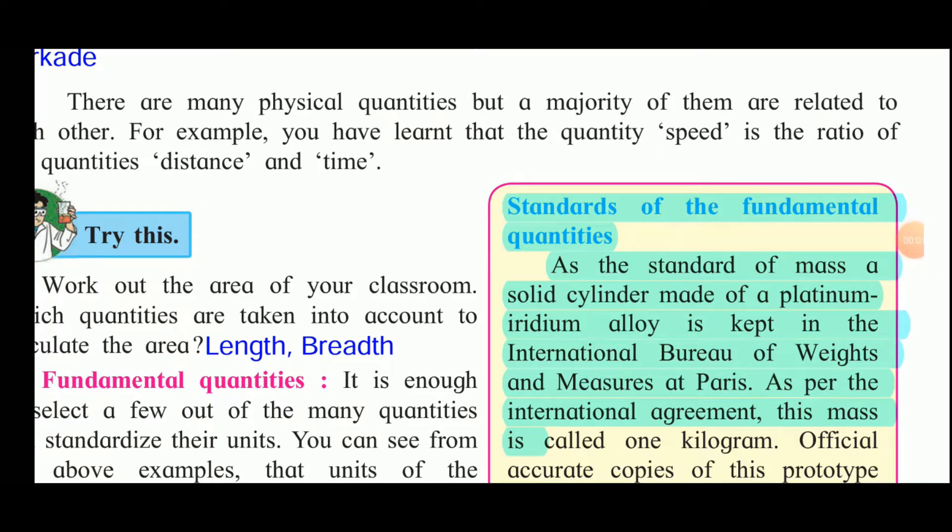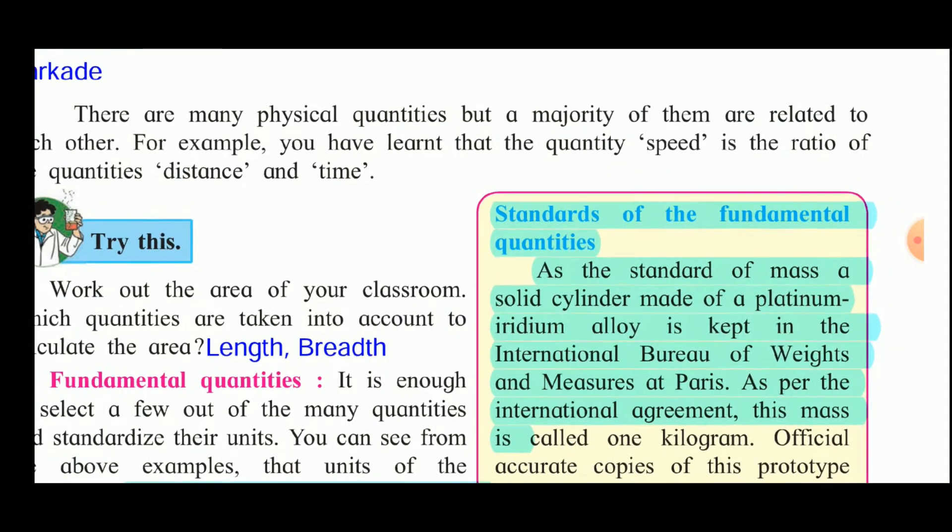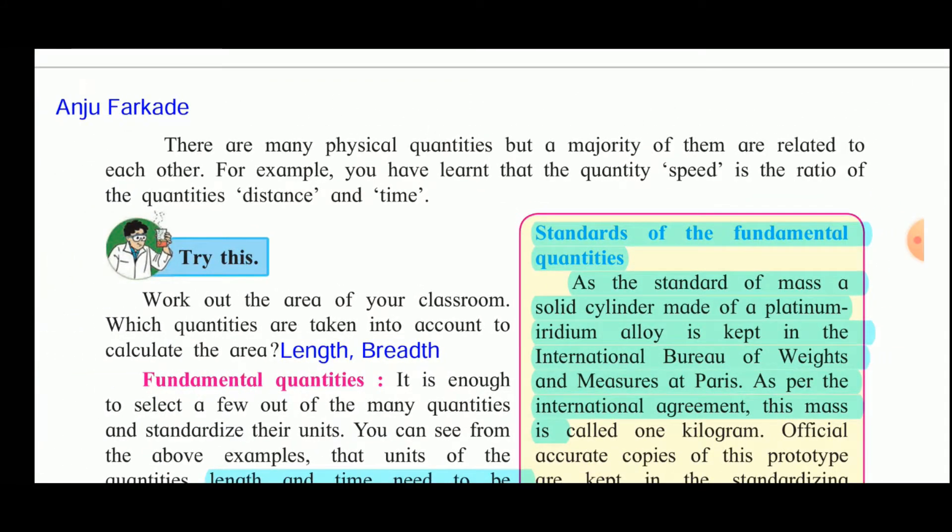Now, next we will see that there are many physical quantities but majority of them are related to each other. For example, the quantity speed. Speed is given by the formula distance upon time. Naturally, the unit of speed will be given by unit of distance upon unit of time. So, in MK system, the unit of speed will be meter per second and in CGS system, it will be centimeter per second.